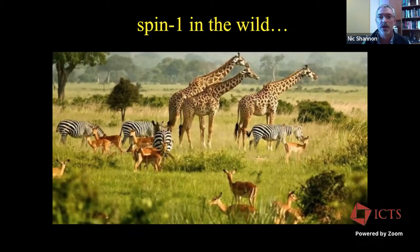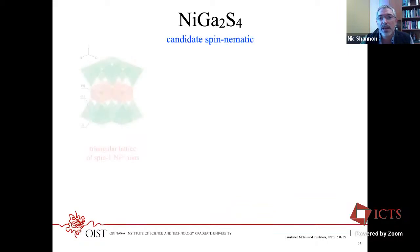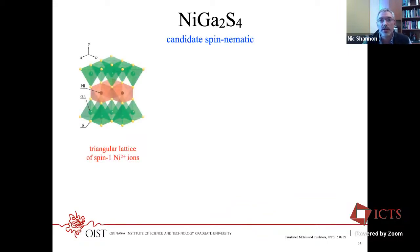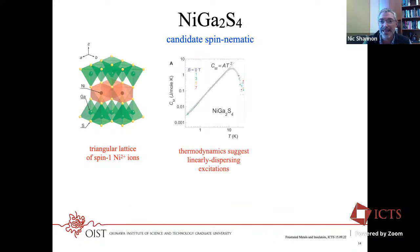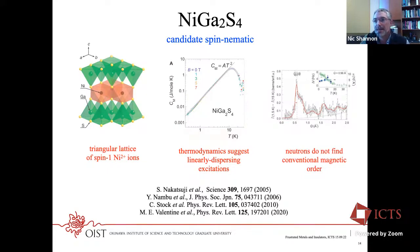Back to the beginning — spin-one in the wild, as Kim likes to put it. NiGaS is a system of spin-one Ni2+ atoms on a triangular lattice in a delafossite structure. It has a T-squared heat capacity, which suggests linear excitations, because it's approximately two-dimensional. Linear excitations would be natural if it were antiferromagnetically ordered. But it isn't — neutron scattering is pretty unambiguous on that. There's no conventional magnetic order that anybody has been able to find. So it was suggested this could be a spin nematic, which would have linearly dispersing Goldstone modes explaining the T-squared and the absence of magnetic order. This is a problem people still work on today.